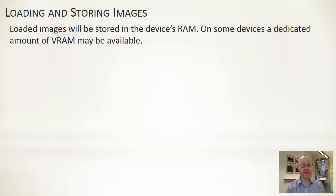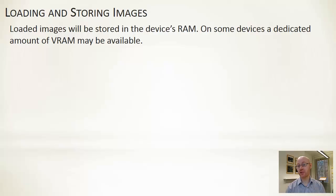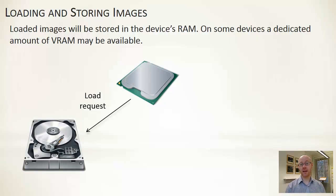On some devices, there is actually a dedicated amount of video RAM — that's RAM set aside for the GPU to use. Quite often it is on the same die as the GPU, so it can be accessed particularly quickly. On other devices, there may just be one large store of RAM that's shared between the CPU and the GPU. But irrespective of this, we will have a load request going out to the storage device on our tablet to load in, for example, an image or an image sheet.